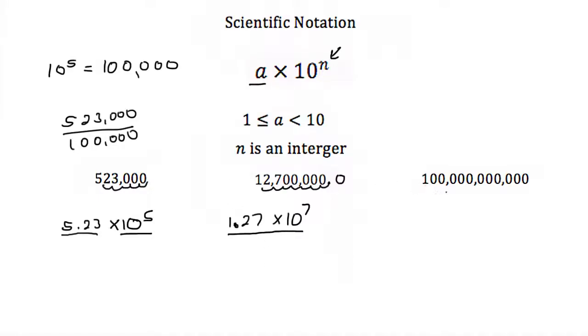If we wanted to write 100,000,000,000 in scientific notation, it would be 1 times 10 to the 1, 2, 3, 4, 5, 6, 7, 8, 9, 10, 11. So 100,000,000,000 is 1 times 10 to the eleventh.